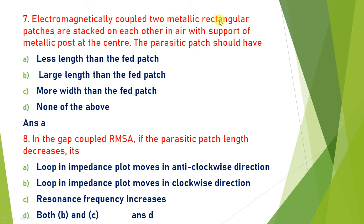Electromagnetically coupled two metallic rectangular patches are stacked on each other in air with support of a metallic post at the center. The parasitic patch is a passive patch — it is not an active patch. Its length is always less than the active feed patch. So the answer is A.